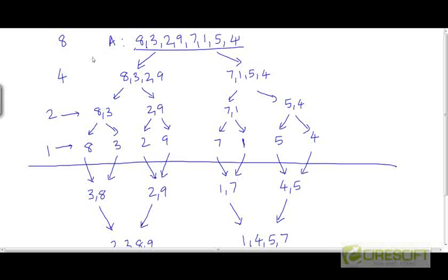One thing you might notice here is that we made the convenient assumption that the length of array A is a power of 2 — like 8 is 2 to the power 3. We can see why that assumption is convenient because at every step in this invocation hierarchy, as we continue to split these smaller problems into further smaller problems, we can always cleanly divide every subproblem into two smaller subproblems, because our initial array was a power of 2. And so the size of these subproblems is also going to remain always a power of 2.